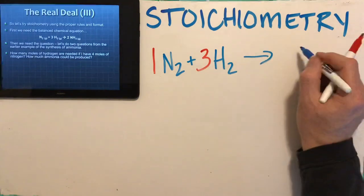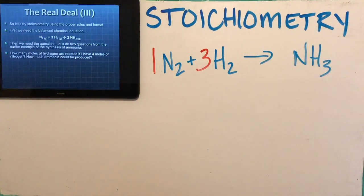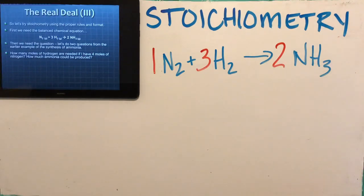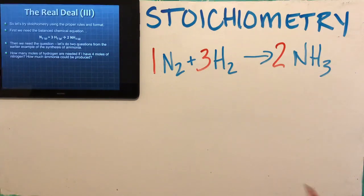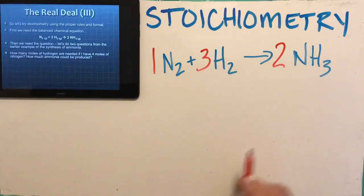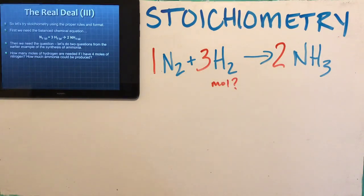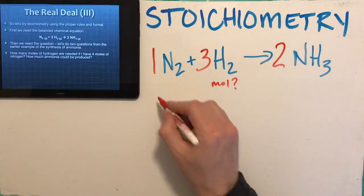So I squeeze my equation up there: N₂ + 3H₂ → 2NH₃. I need that balanced chemical reaction to do any stoichiometry — I have to have the balanced chemical reaction first. This is my recipe. I can't tell you how much of something I need unless I've got the recipe. The first question: how many moles of hydrogen are needed if I have four moles of nitrogen?